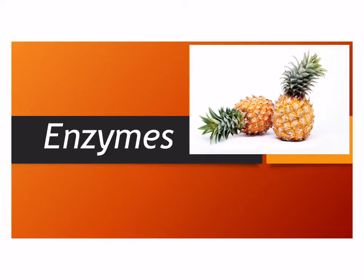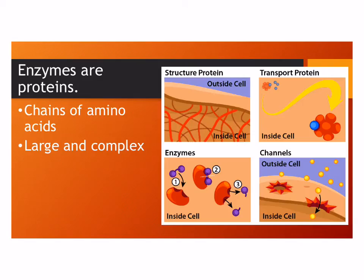This lesson is going to be about chemicals in cells and living things called enzymes. Enzymes are proteins, just like other proteins we've talked about — they're made of amino acids, large and complex. Proteins inside living things might form structures like bone, muscle, or hair, act as transport proteins, or serve as channels for things to move into and out of cells. Or they might be enzymes.